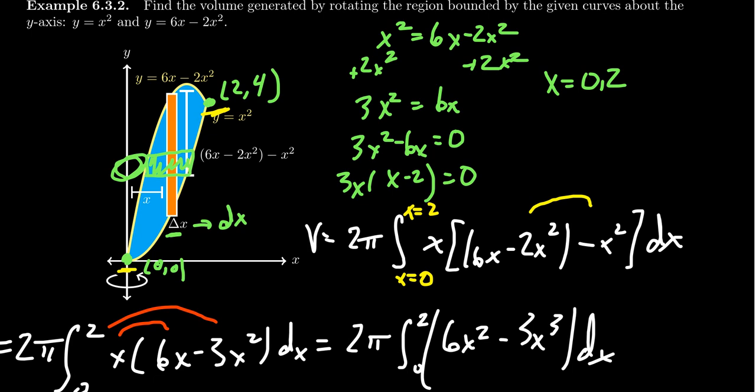With the washer method, you have to pay attention to the outer radius and the inner radius. One thing I really like about the shell method is it automatically keeps track of holes. You don't have to worry about a longer radius and a shorter radius. And so if I had to pick between the methods, I think the shell method actually does turn out to be a little bit cleaner typically.